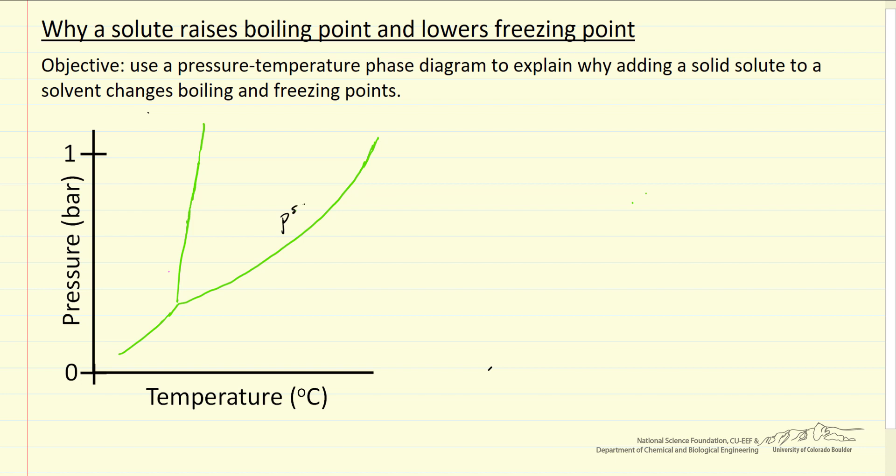So on this diagram, this is the saturation pressure of the solvent above the liquid phase, so liquid-vapor and solid. This is the line that separates the solid from the liquid, and if we look at one bar pressure, this would be the boiling point at one bar pressure for the solvent.